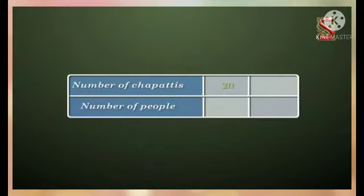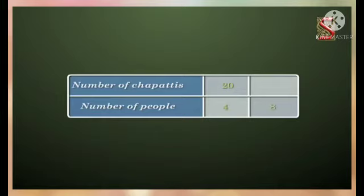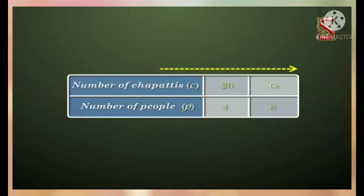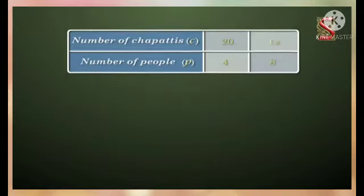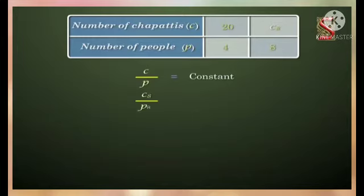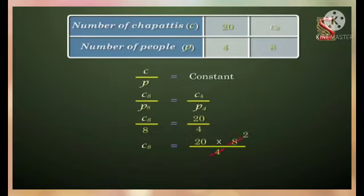Now let us go back to the situation where the lady prepared 20 chapatis for 4 people. Let us find how many chapatis she has to make for 8 people. Let the number of chapatis be c and the number of people be p. Since c/p is constant, c8/p8 = 20/4, so c8 = (20×8)/4 = 40. Therefore, the lady has to prepare 40 chapatis.